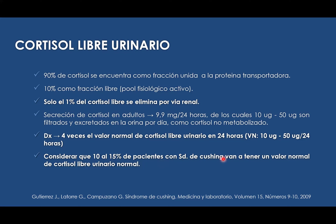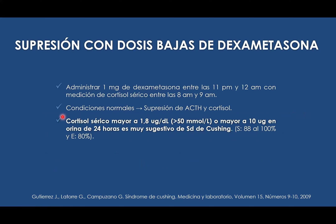Considerar que el 10 al 15% de pacientes con síndrome de Cushing van a tener un valor normal de cortisol libre urinario. Para eso tenemos otro tipo de pruebas, como la supresión con dosis bajas de dexametasona, en la cual se indica aplicar 1 miligramo de dexametasona a las 11 de la noche, con medición de cortisol entre las 8 y 9 de la mañana. El cortisol sérico mayor a 1.8 microgramos por decilitro o mayor a 10 microgramos en orina es muy sugestivo de síndrome de Cushing, con una sensibilidad del 88 al 100% aproximadamente.